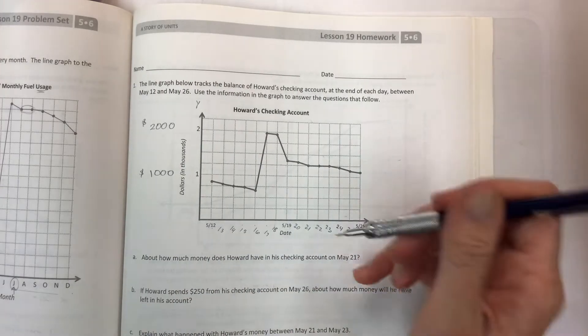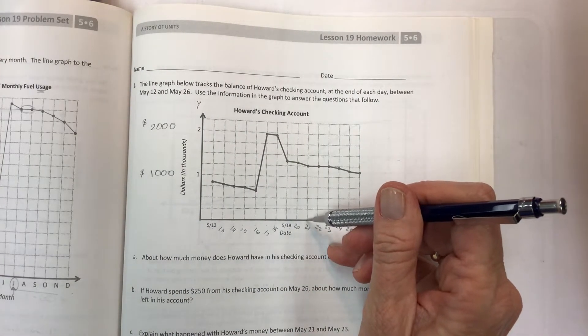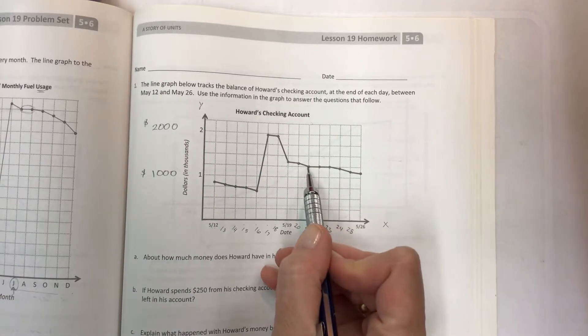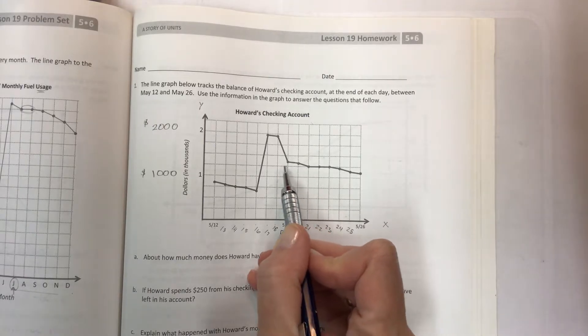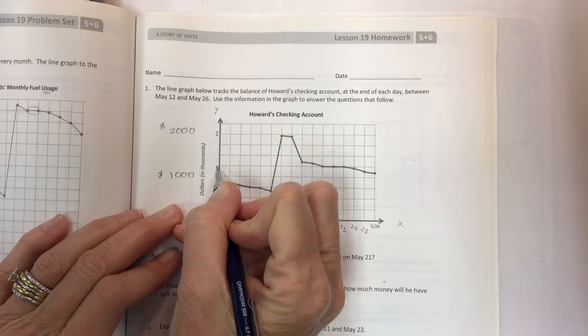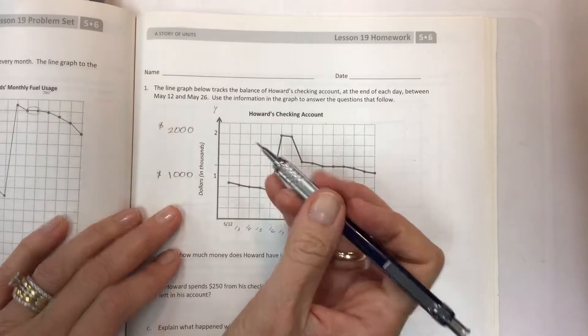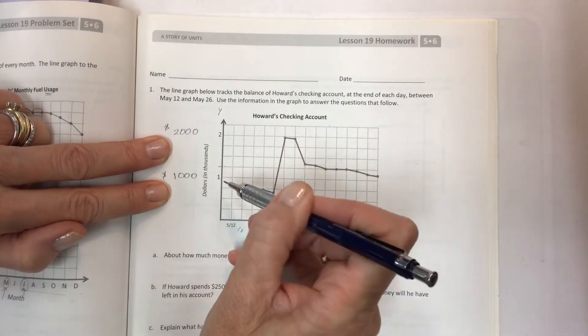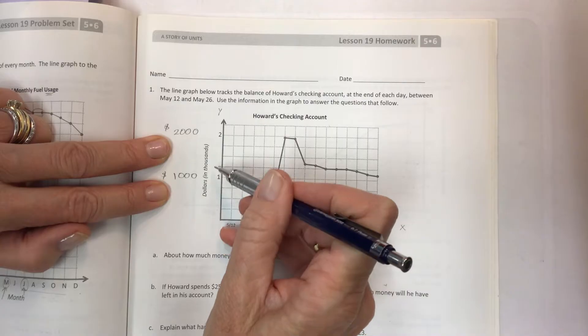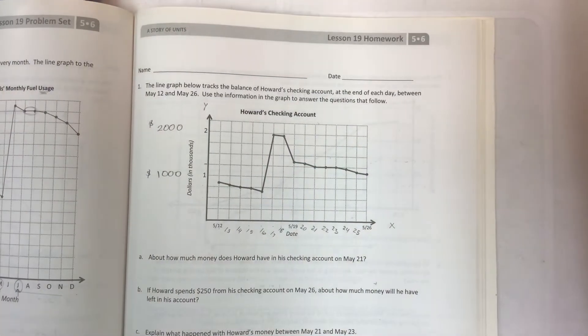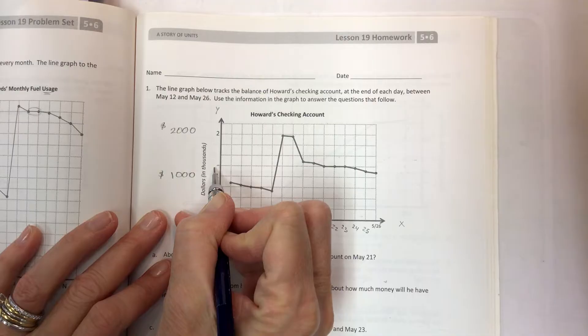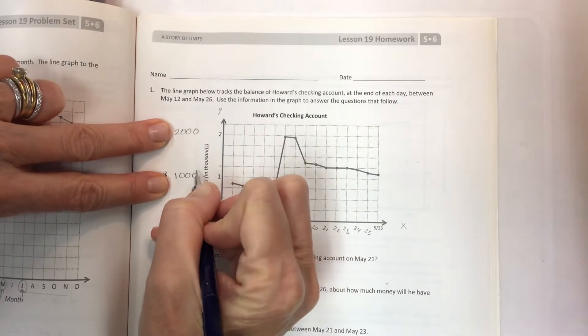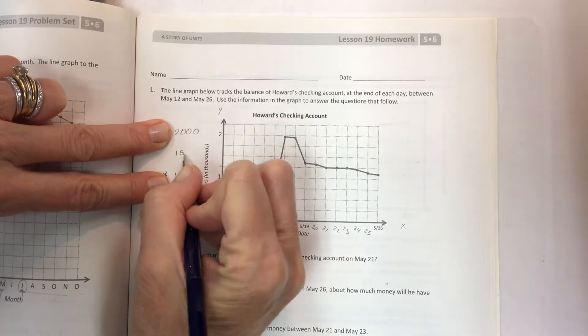About how much money does he have in his checking account on May 21st? Find this line and go up to this intersection, and how nice that our first question actually has a point on a line where I could say, I have a value right here. Now, the only problem is that if you're counting by a certain amount and it's not given, and we have thousands, then what would be the value of this? If the halfway point between 1,000 and 2,000 has 500 more, you could say, that's 1,500.